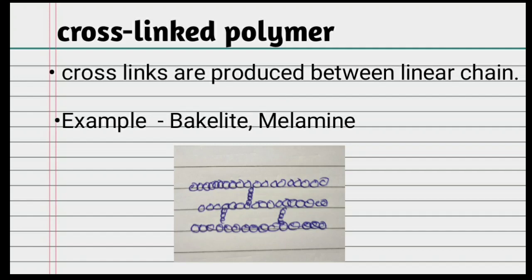The last type is cross-linked polymer. Cross-links are produced between linear chains. Cross-linked polymers have connections between the chains, as shown in the picture.